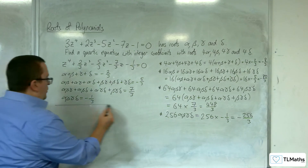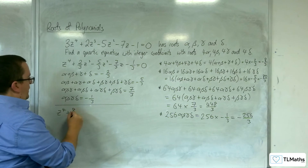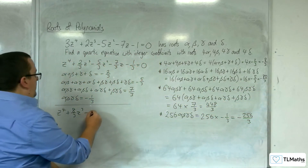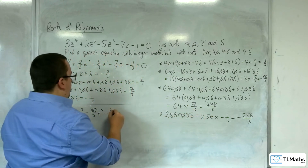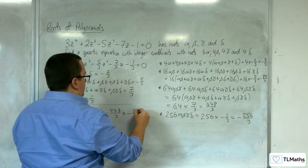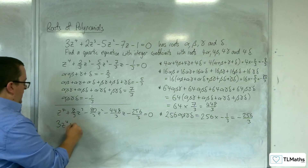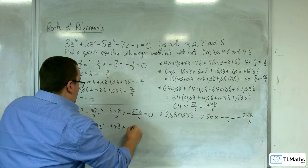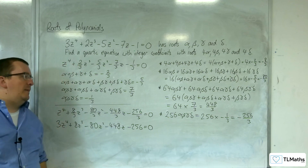So my new quartic equation will be z⁴ - (-8/3)z³ + (-80/3)z² - (448/3)z + (-256/3) = 0, which simplifies to z⁴ + (8/3)z³ - (80/3)z² - (448/3)z - 256/3 = 0. Multiplying through by 3 to get integer coefficients: 3z⁴ + 8z³ - 80z² - 448z - 256 = 0. This is the quartic equation with roots 4 alpha, 4 beta, 4 gamma, and 4 delta.